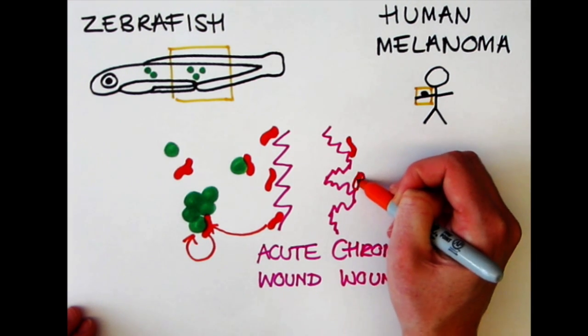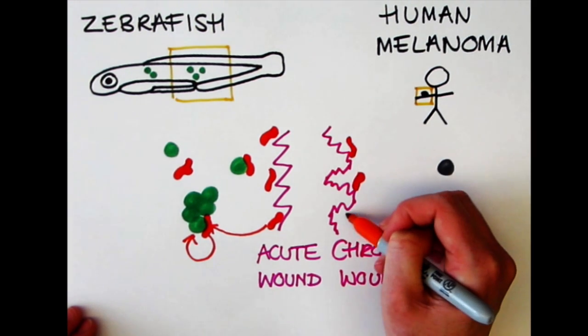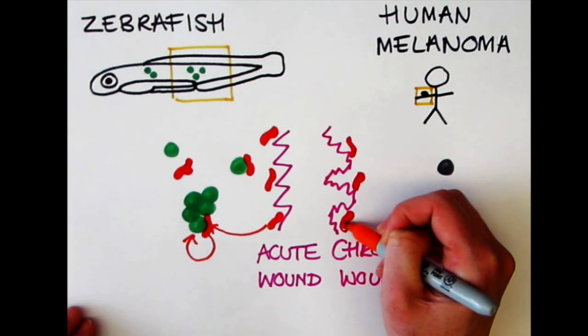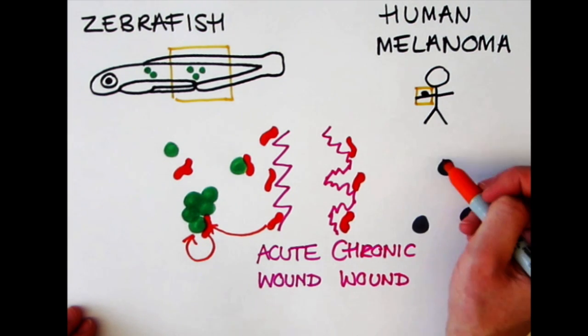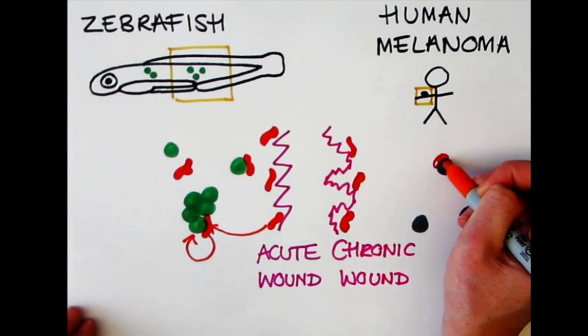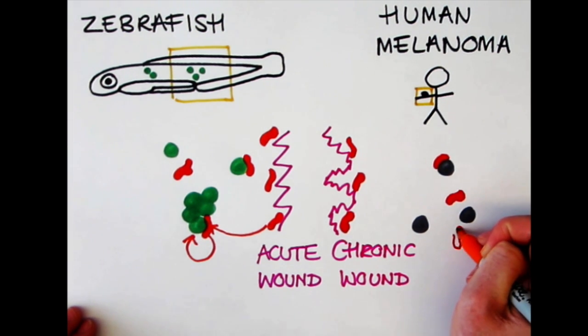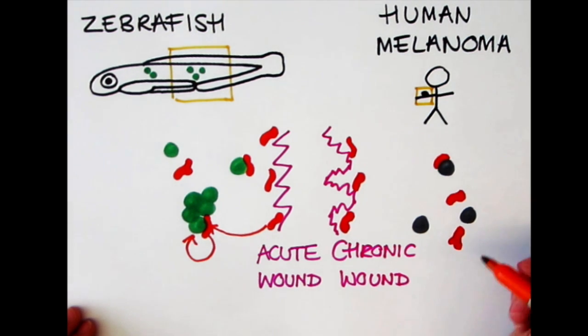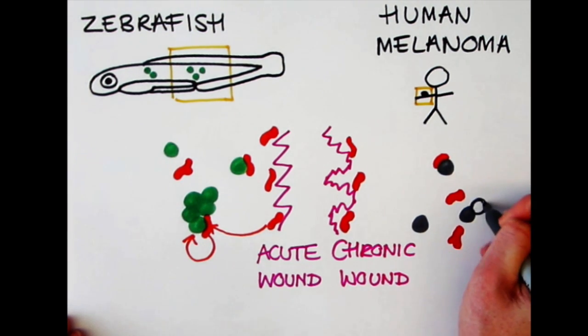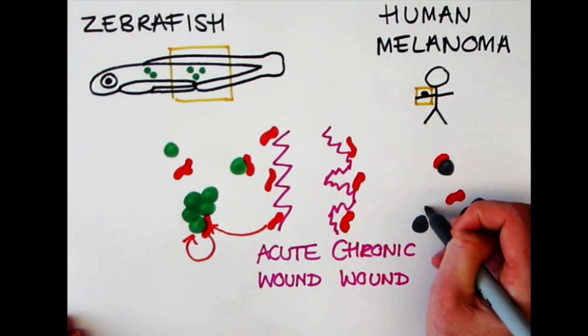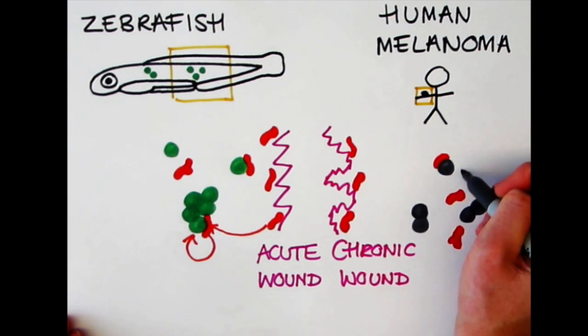Now no longer preneoplastic cells as they were in the zebrafish model, but these are cancer cells. It draws neutrophils to them, and that, just as in the fish model, leads to those cancer cells proliferating more than they would if there hadn't been a wound.